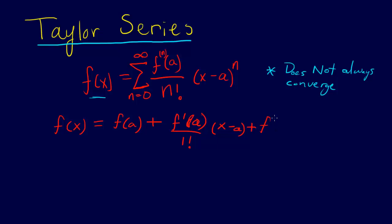F double prime of a over 2 factorial times x minus a squared plus, and we can keep going.